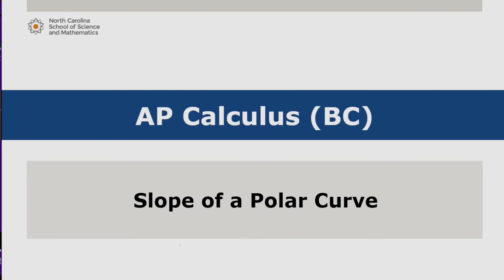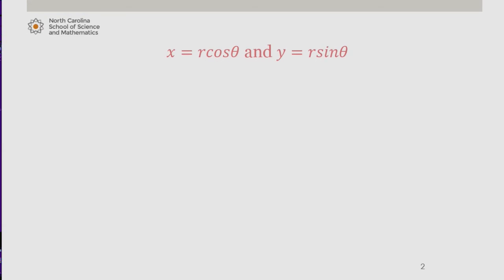In this video, we'll find a general expression for calculating the slope of polar curves. Recall that the relationship between rectangular and polar coordinates is x equals r cosine theta and y equals r sine theta.